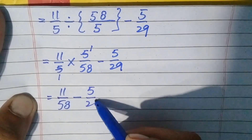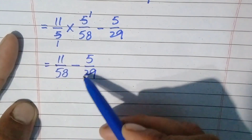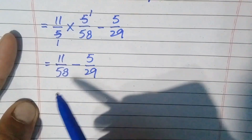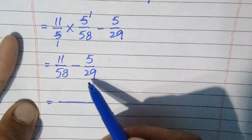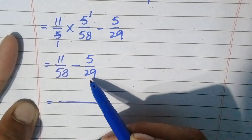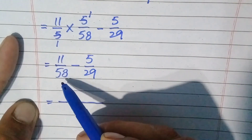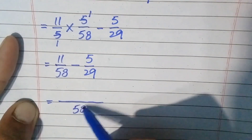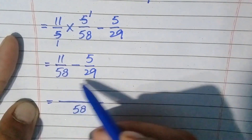Now only subtraction is left — subtracting 5/29 from 11/58. We need the LCM of 58 and 29. Note that 58 is a multiple of 29, because 29 times 2 is 58. So their LCM is always 58. If one number is a multiple of another, their LCM is always the greater number.